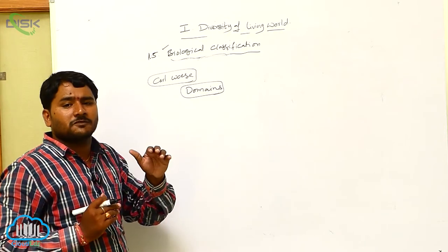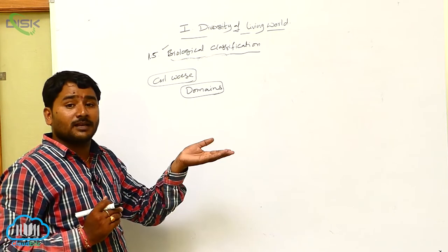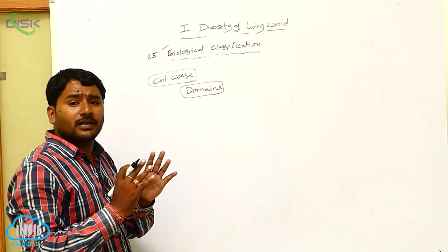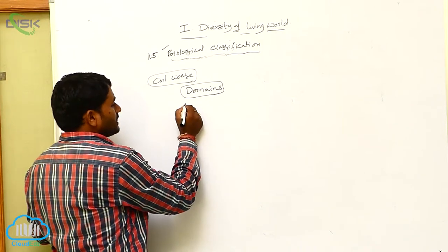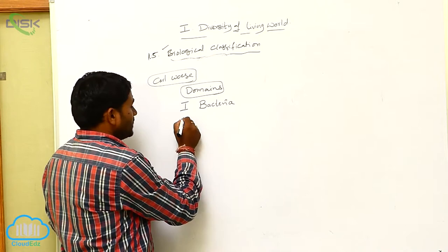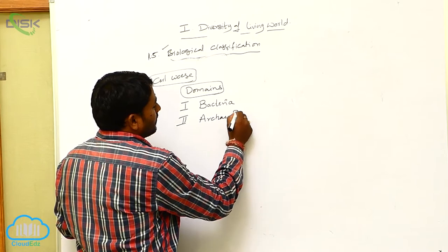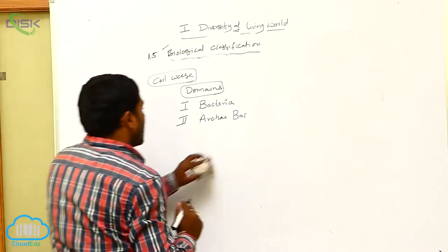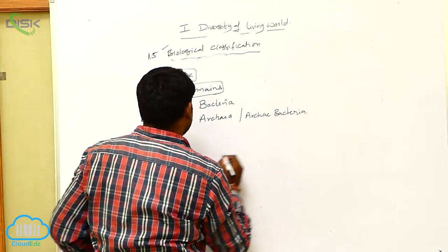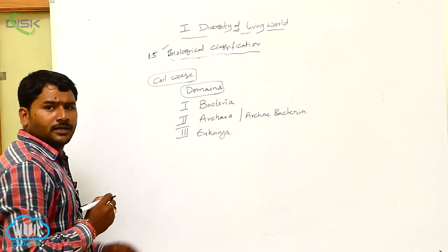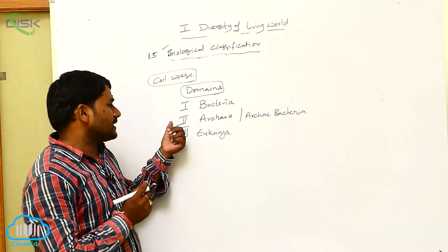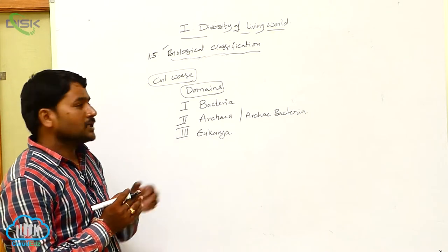As per Carl Woese, a few organisms placed in the prokaryotes or Monera are not similar with the prokaryotes but are similar with the eukaryotes. That is why they were separated and kept in a separate domain. So as per Carl Woese, there are three domains: the first is Bacteria, the second is Archaebacteria — also called Archaea — and the third is Eukaryotes, or Eukarya.